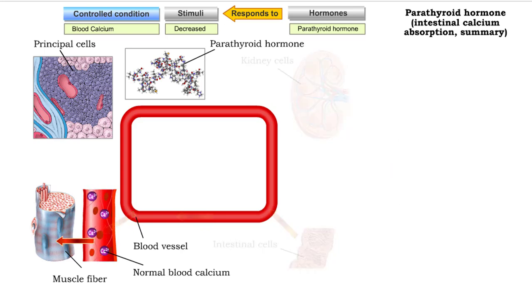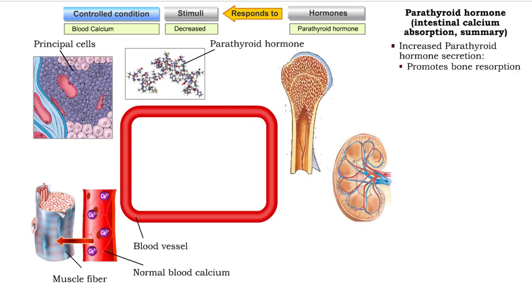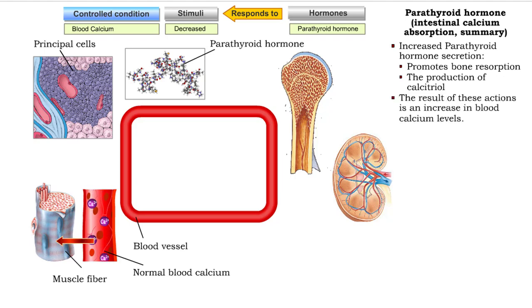Increased parathyroid hormone secretion promotes bone resorption and the production of calcitriol. The result of these actions is an increase in blood calcium levels.